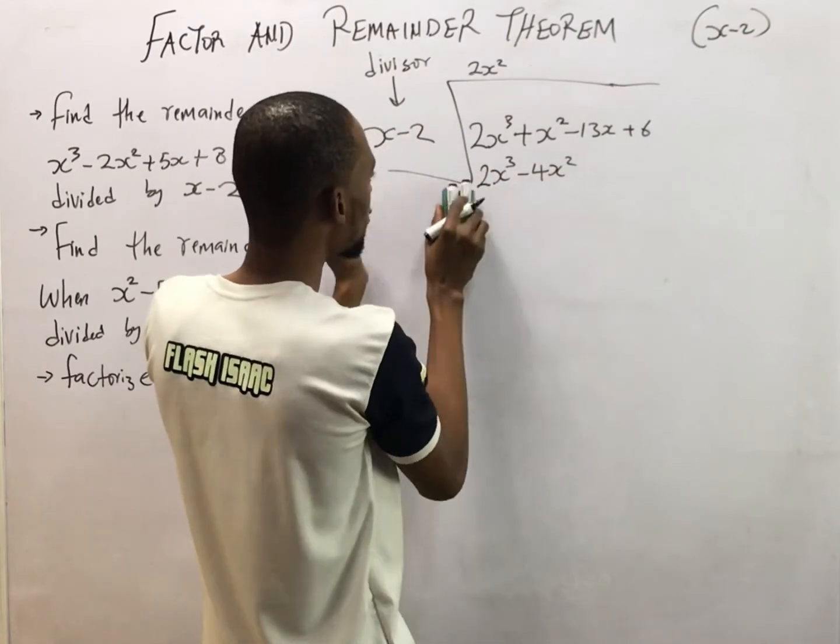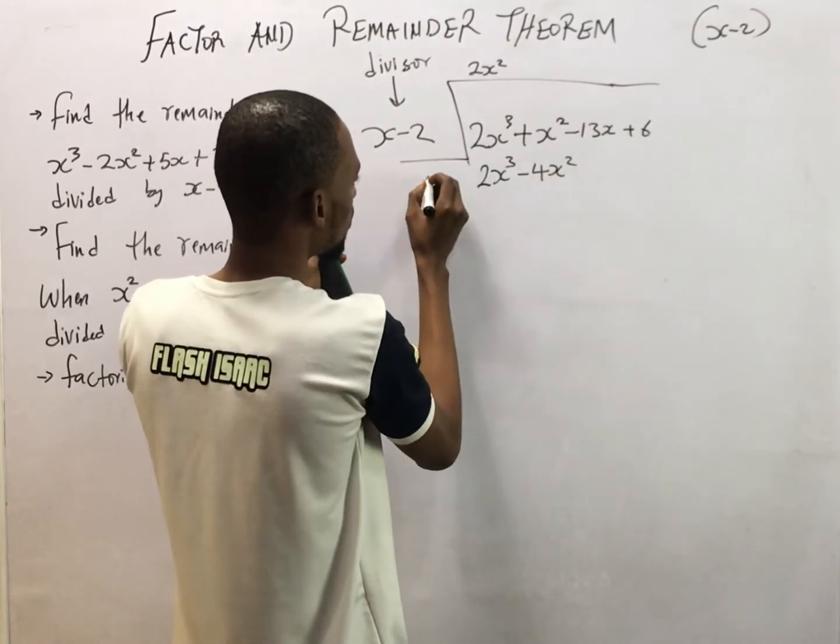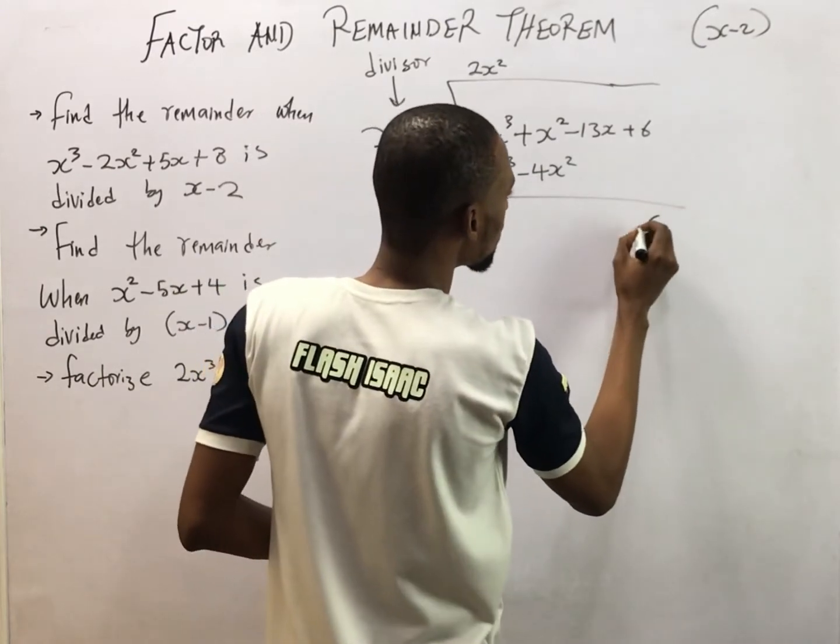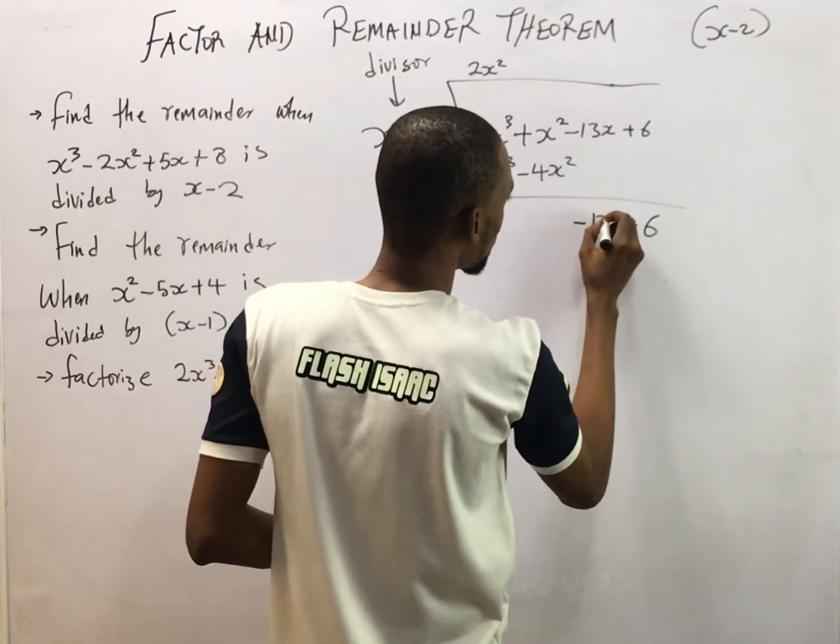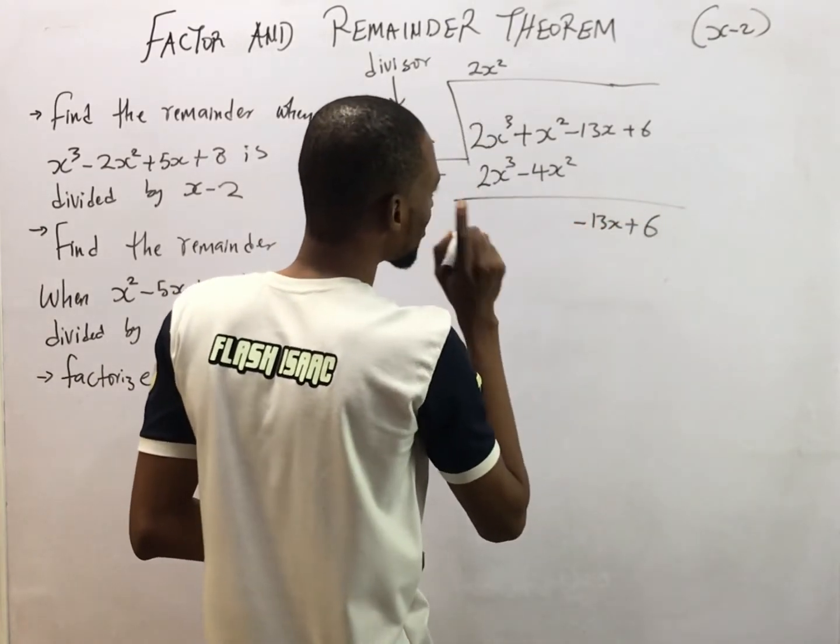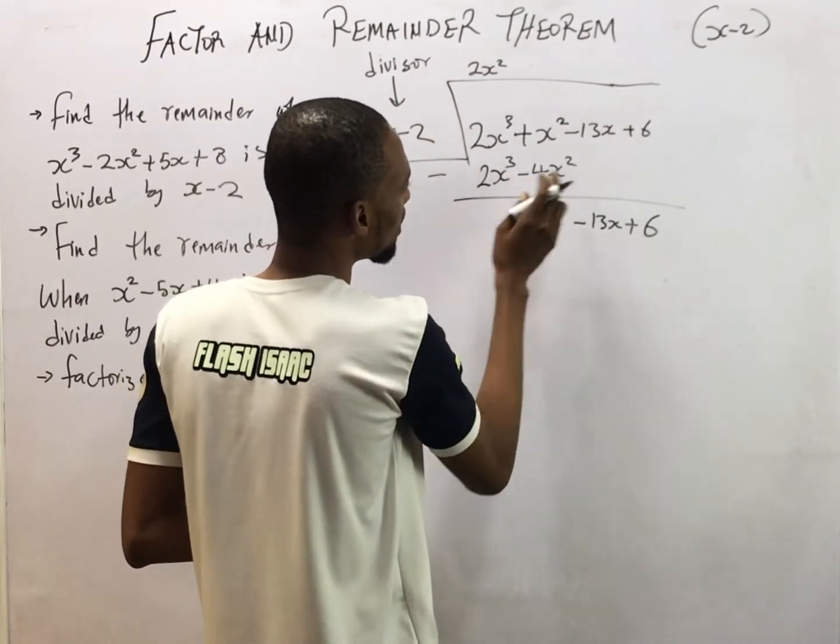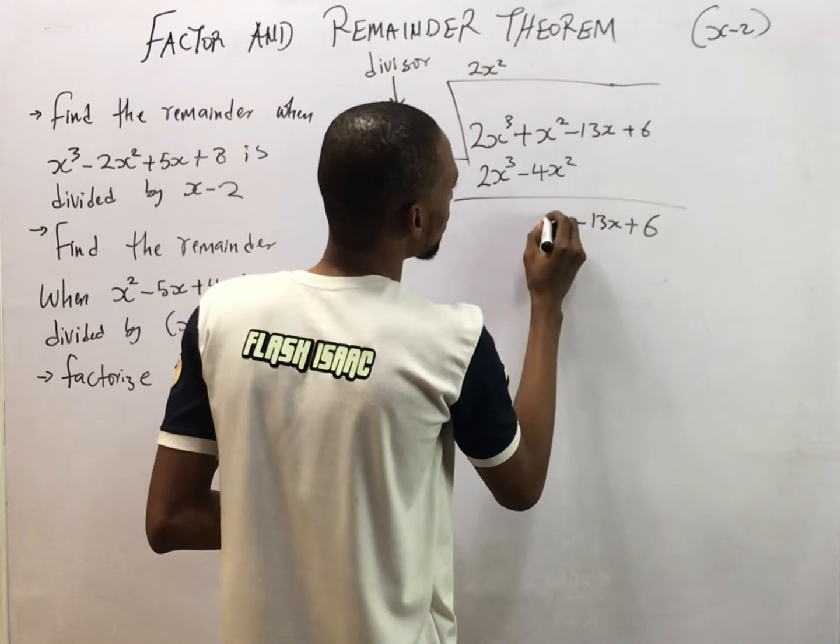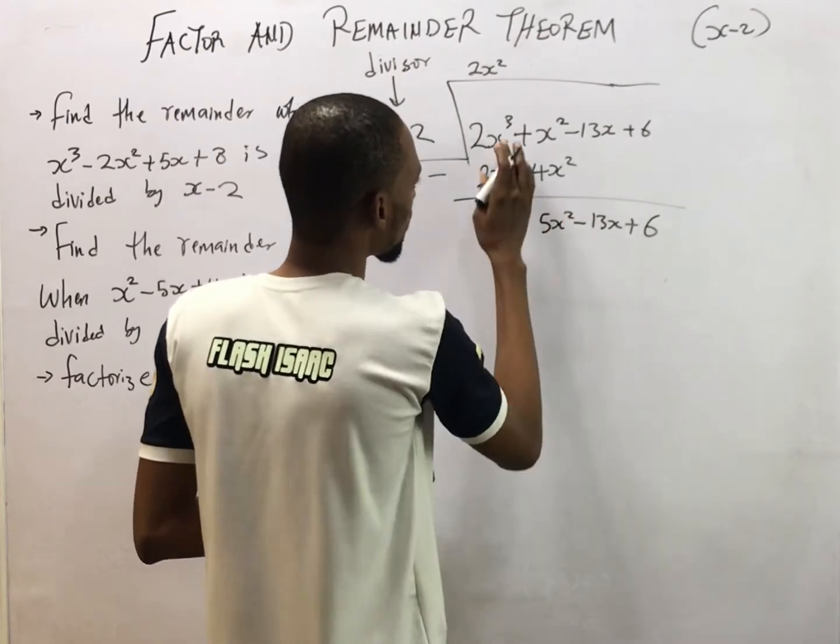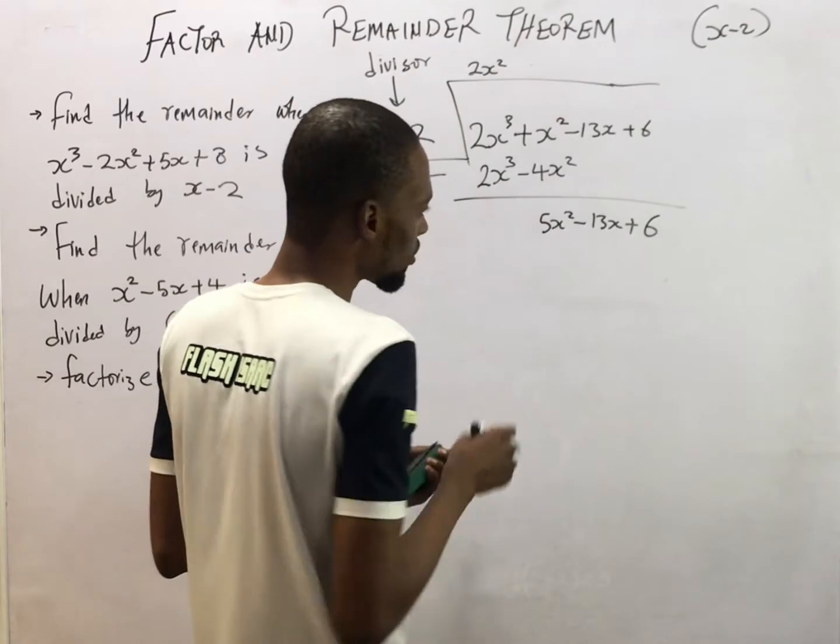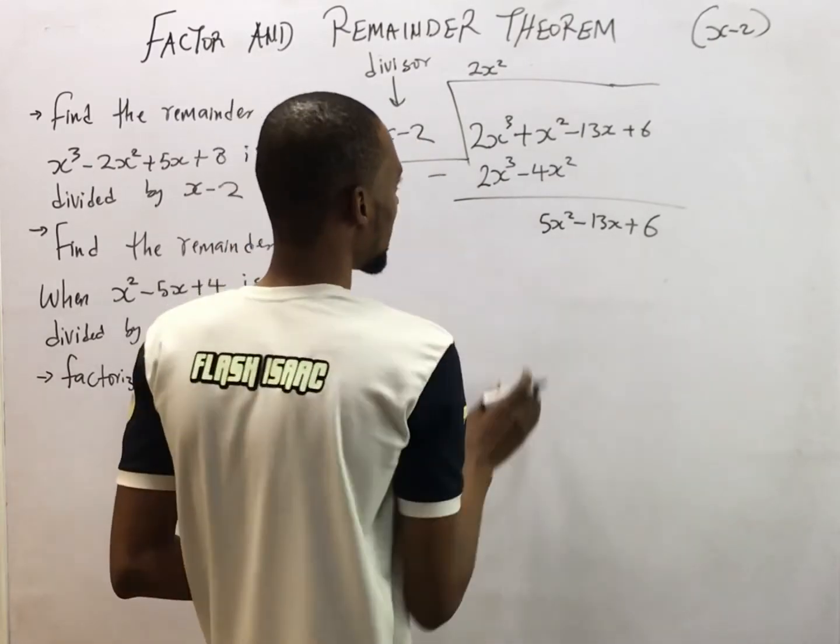So subtracting, we have S squared minus minus 4S squared will give you 5S squared. 2S to the power of 3 minus 2S to the power of 3 will give you 0. So we are here.